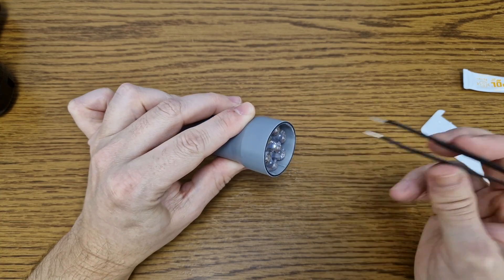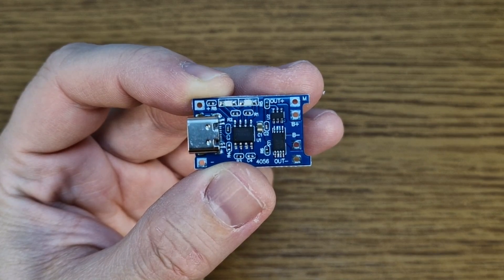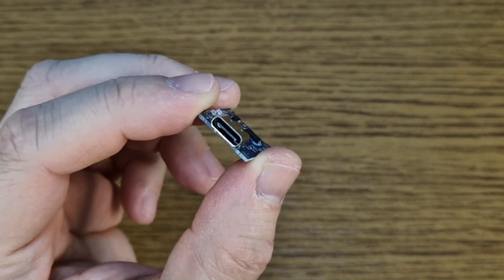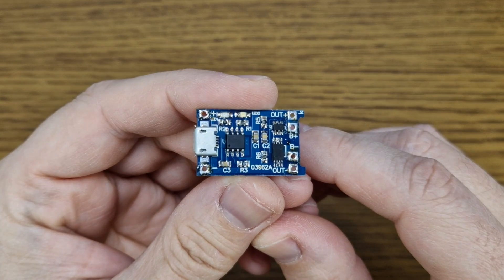While the glue dries let's check the charging module. A TP4056 module is good enough to charge a single lithium ion cell. You can use it with a USB type C or a micro USB connector.